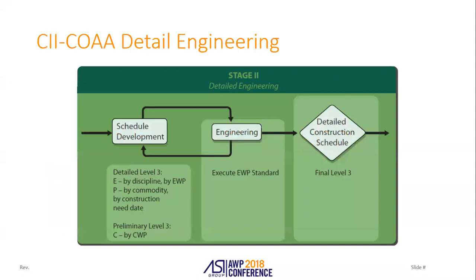The EWP is part of stage two, the detailed engineering phase of the project. The schedule should be developed to a level three prior to going into detailed engineering, and really all engineering is doing at that stage is executing EWPs and issuing them to meet the construction schedule.